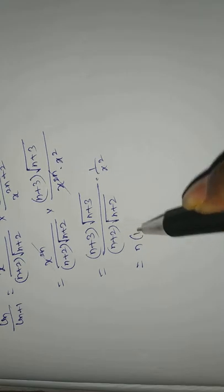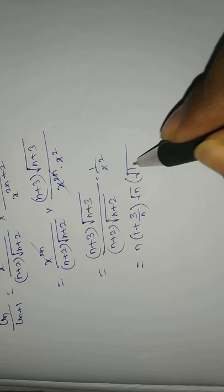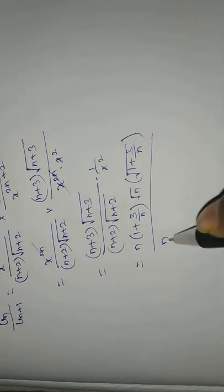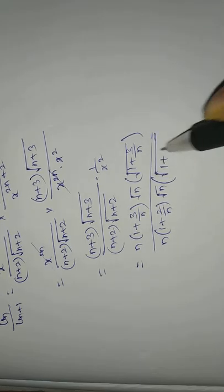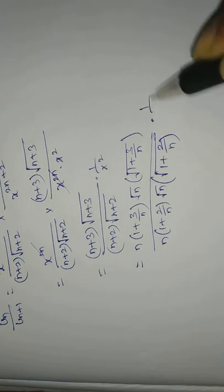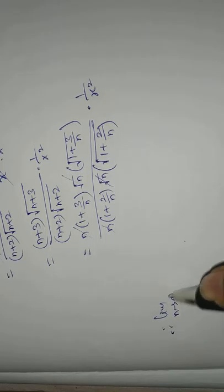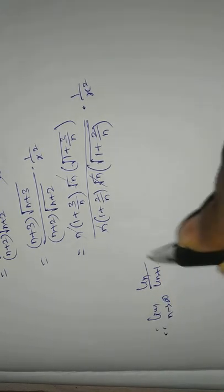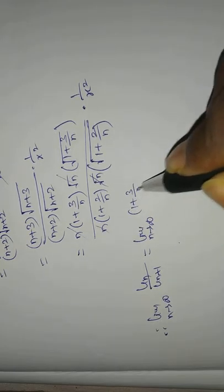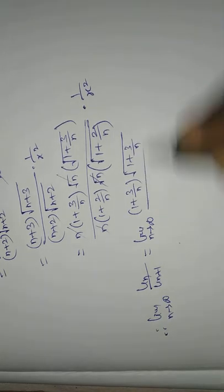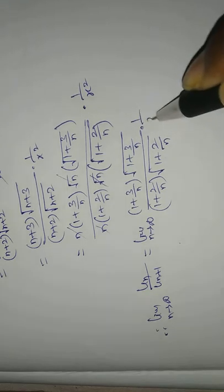Taking n as a common factor: the numerator becomes n·(1 + 3/n)·√n·√(1 + 3/n), and the denominator becomes n·(1 + 2/n)·√n·√(1 + 2/n), all times 1/x². The √n and n factors cancel between numerator and denominator.